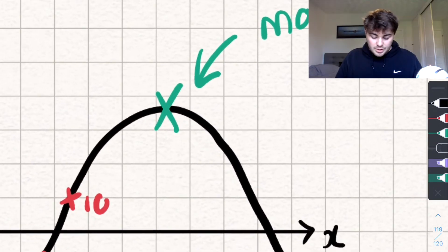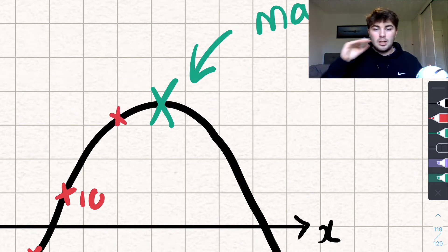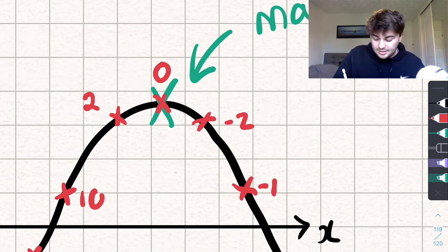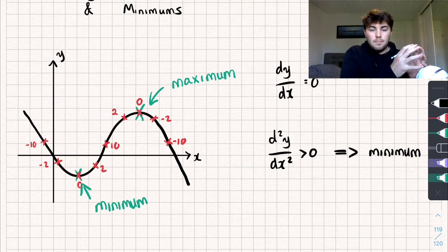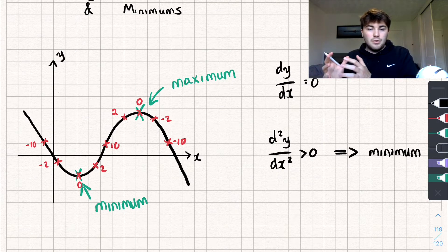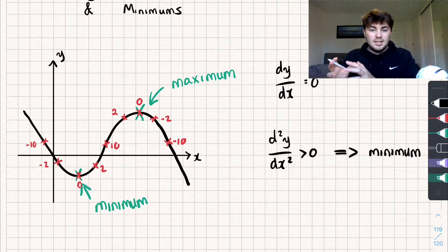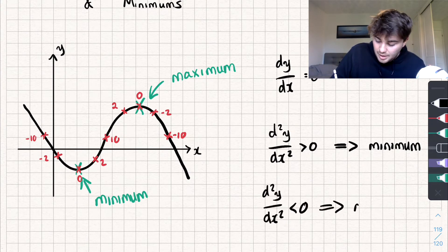By the same logic, looking at the maximum: the gradient there is 10, getting closer it might be 2, at the stationary point it's 0, then negative 2, then negative 10. So around the maximum the gradient is going from a positive number and changing to a negative — its rate of change is negative. So the second derivative d²y/dx², if that is less than zero, then we have a maximum.